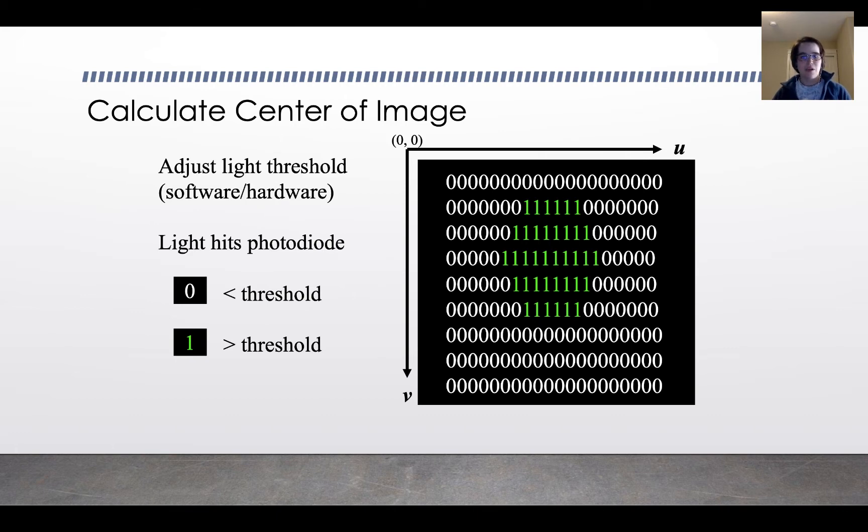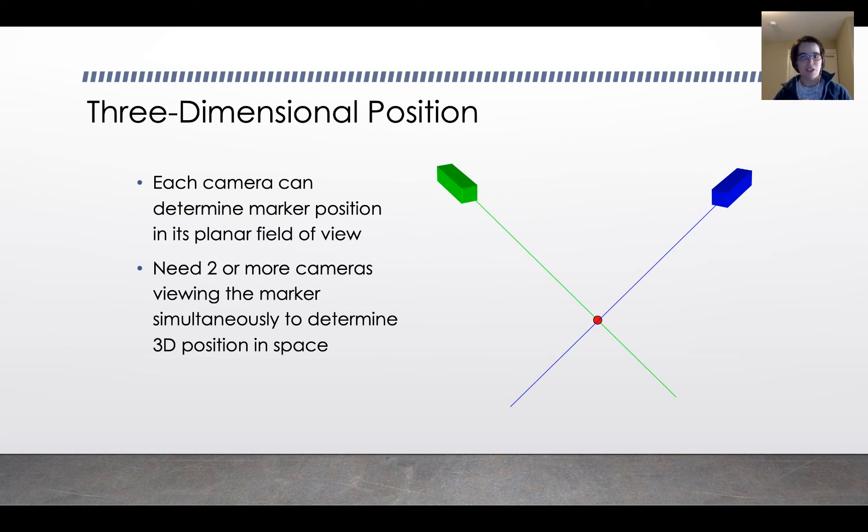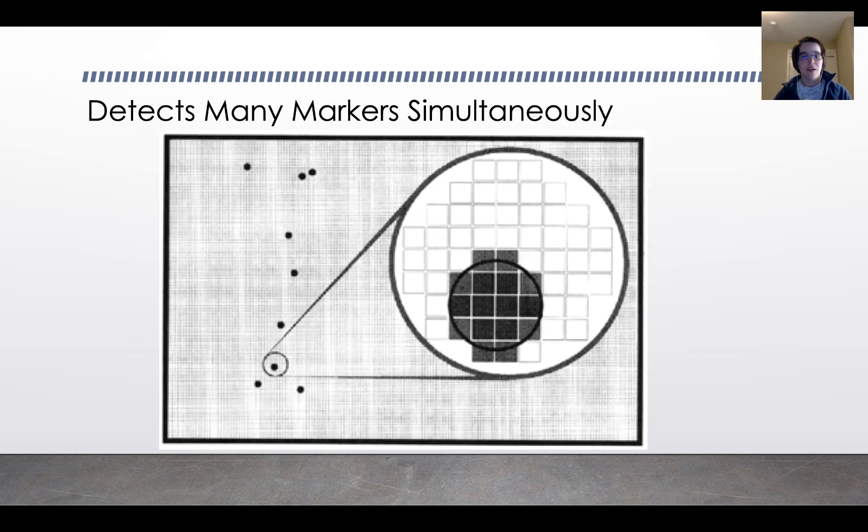It doesn't have any way to say this is the marker on the hip versus the marker on the knee versus the marker on the ankle. It has to rely on position because it's taking a three-dimensional position from two cameras. Each camera can only determine marker positions in their planar field of view. To determine a three-dimensional position, you need simultaneous measurements from at least two different cameras. The more cameras you have on a marker, the better accuracy you have. It takes the pixelated grid and interprets that as marker position. The advantage is that it can interpret many marker positions simultaneously.